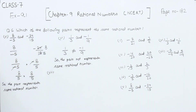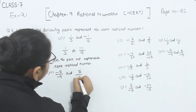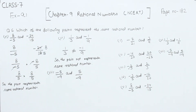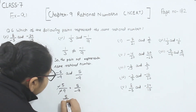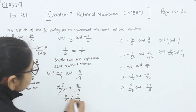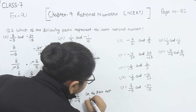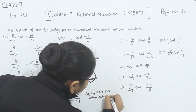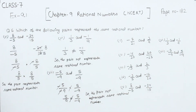Now comes part 7. We have minus 5 by minus 9 and 5 by minus 9. They are already in the simplest form. For minus 5 by minus 9, the negatives cancel to give 5 by 9. But the second one is 5 by minus 9, so they are not equal. The given pair does not represent the same rational number. With this, we have completed part 7 and question number 6. In the next video, we are going to start with question number 7.